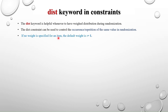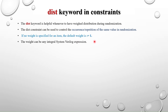If no weight is specified for an item, the default weight is 1. When using the dist keyword, if you don't mention any weight, it provides 1 by default. The weight can be any integral SystemVerilog expression.